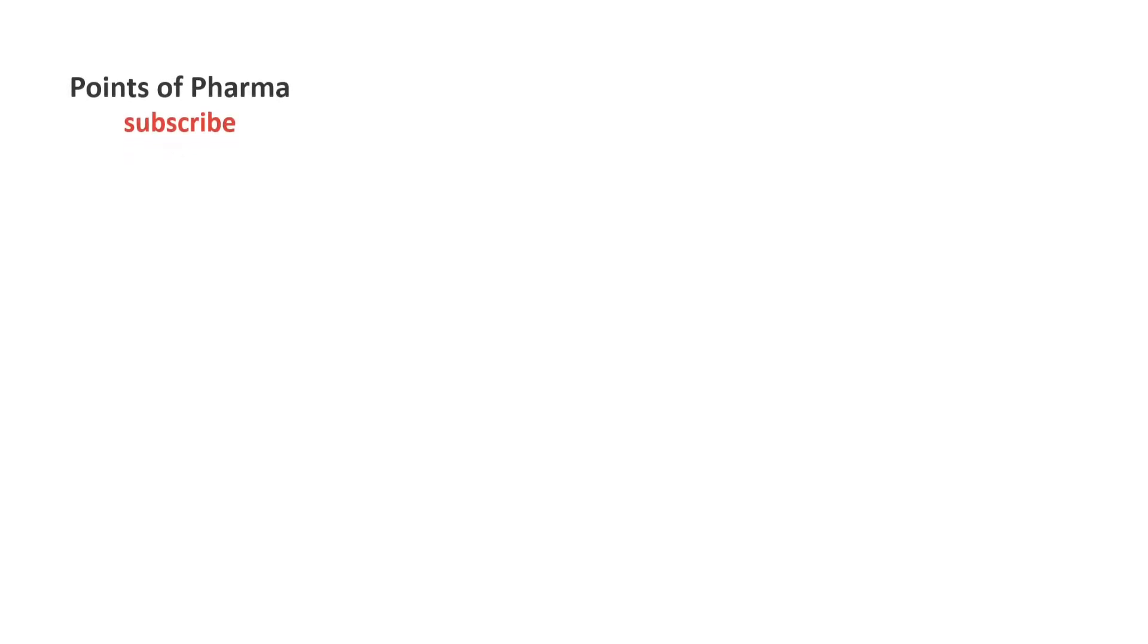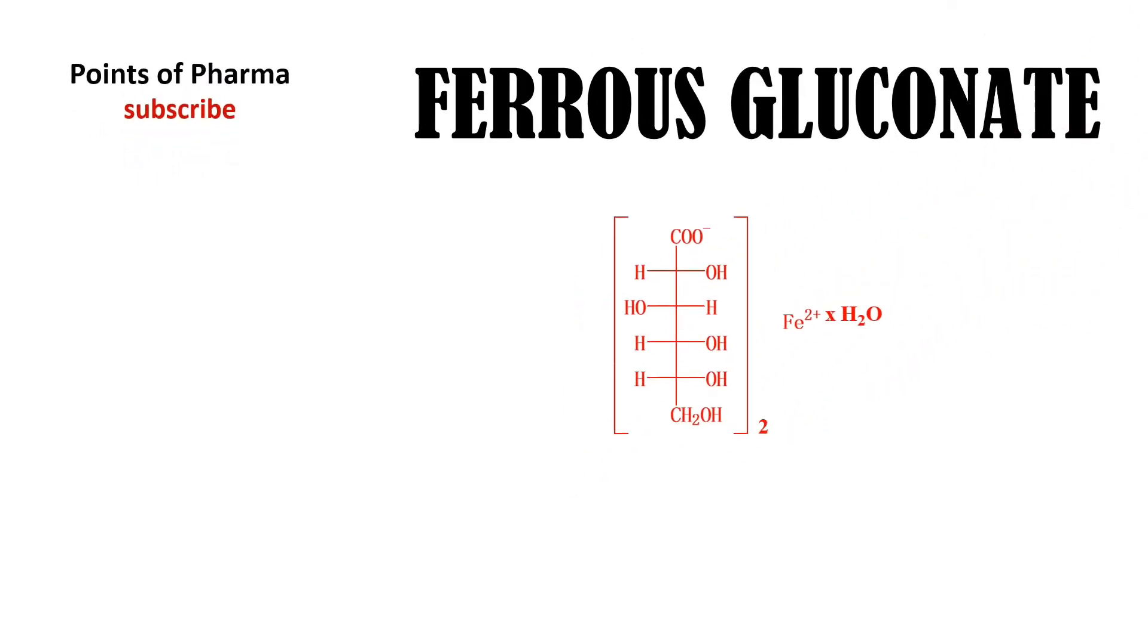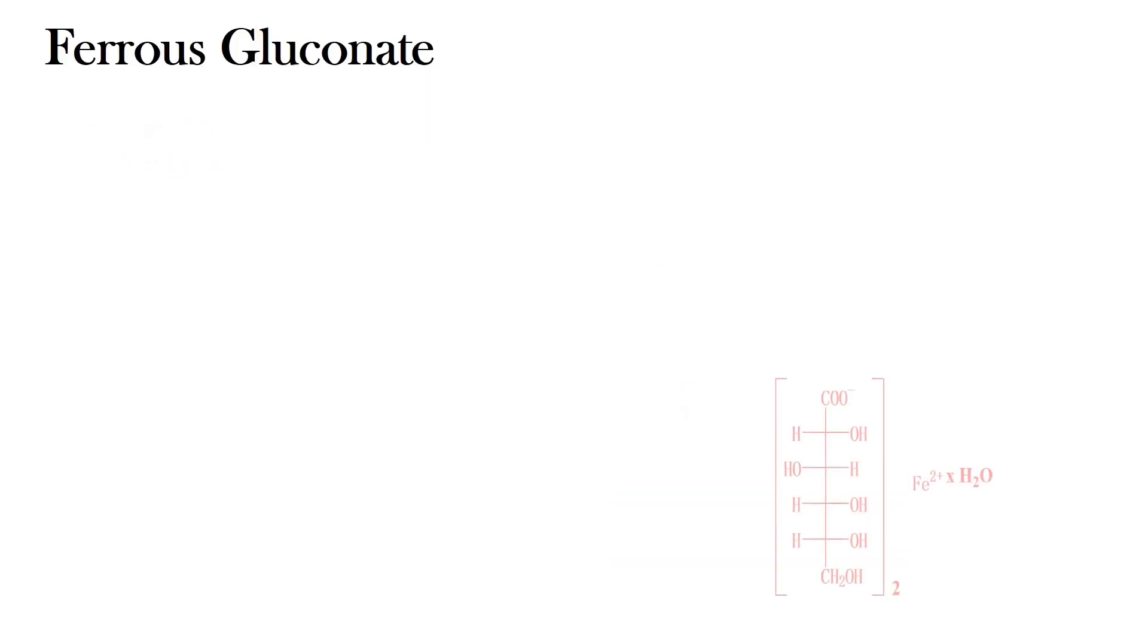Hello everyone, welcome to Points of Pharma. Today the topic is Ferrous Gluconate. Ferrous Gluconate is a source of iron and it is categorized as hematenic.